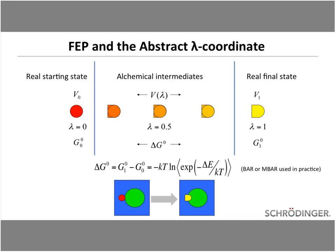In practice, you have a real starting state — ligand 1 — and a real final state — ligand 2. We alchemically interpolate between them using intermediate states. Using the machinery of statistical mechanics, we compute rigorously the free energy change of the system for this alchemical process. In practice, BAR and MBAR are almost always used.